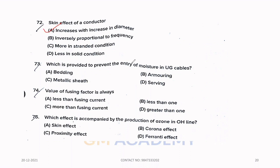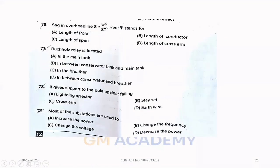Seventy-three. Which is provided to prevent the entry of moisture in underground cables? Option C, metallic sheath. Seventy-four. Value of fusing factor is always, option D, greater than 1. Seventy-five. Which effect is accompanied by the production of ozone in overhead line? Option B, corona effect.